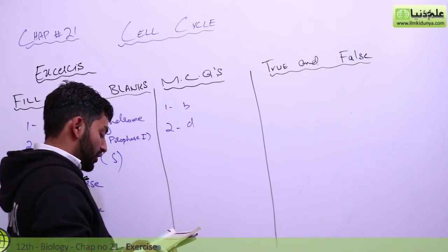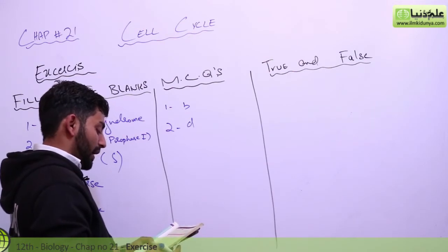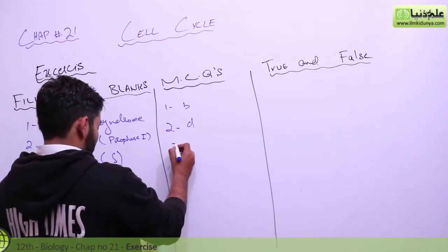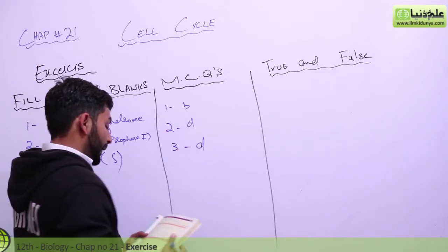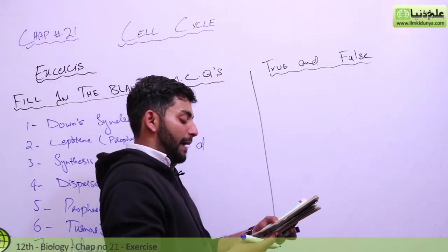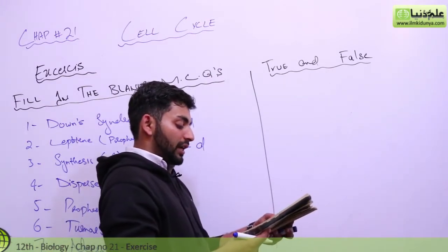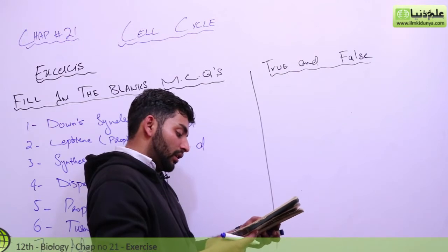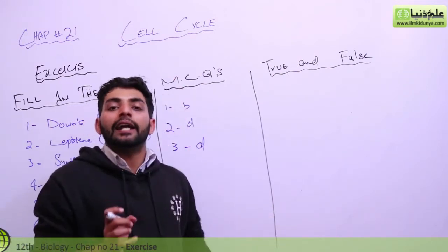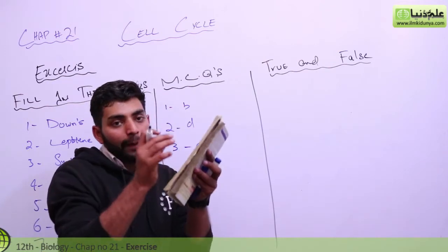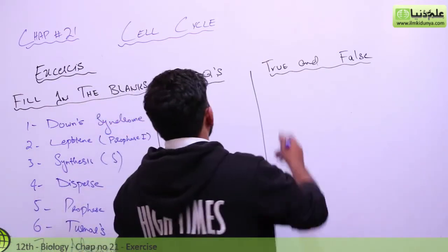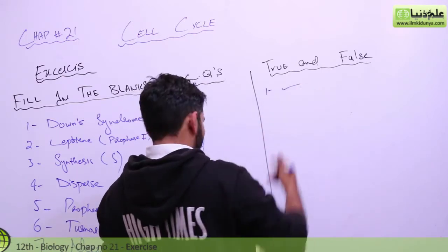Separation of homologous chromosomes occurs during prophase, metaphase, telophase, or anaphase. The answer is D — anaphase. Next: true or false — meiosis occurs only in haploid cells. Meiosis occurs in diploid cells, but in haploid cells we term it differently, so this statement is false.